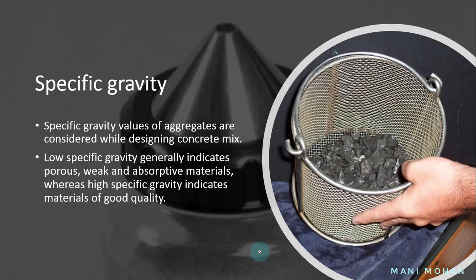Specific gravity: specific gravity values are used while designing a concrete mix. Specific gravity is a means to decide the suitability of the aggregate. Low specific gravity generally indicates porous, weak, and absorptive materials, whereas high specific gravity indicates material of good quality. Specific gravity of major aggregates falls within the range of 2.6 to 2.9.